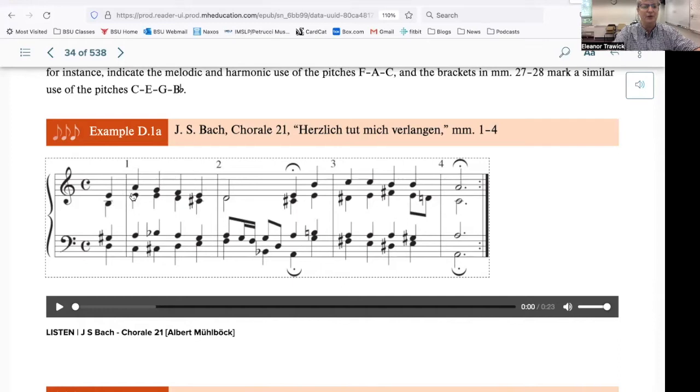Below it, still in treble clef, but a little bit lower, is what we would call the alto line. In the bass clef, the higher of the two parts, the part that has the stems going up from the notes, is the tenor part. And finally, the lowest line is the low line in the bass clef, which has the stems going down. This is the bass part.